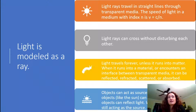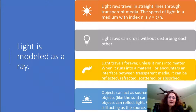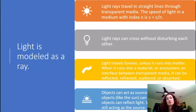Light travels forever unless it runs into matter. When it does run into a material or encounters an interface between media, it can be reflected, refracted, scattered, or absorbed.